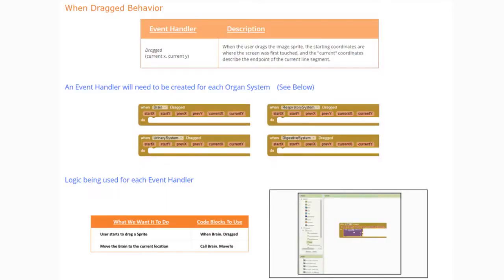Now let's look at the when dragged behavior. The event handler we're going to use is when dragged. When the user drags the image sprite, the starting coordinates are where the screen was first touched, and the current coordinates describe the endpoint of the current line segment. You will need to create an event handler for each of the organ systems.